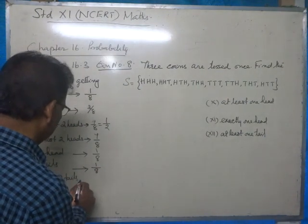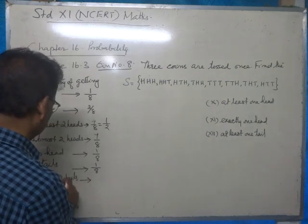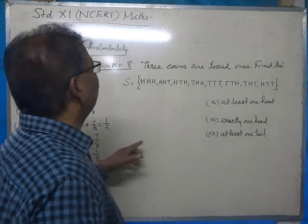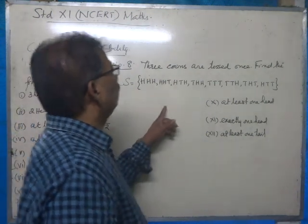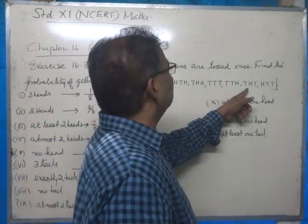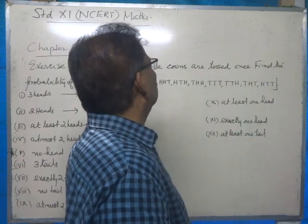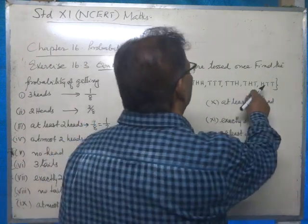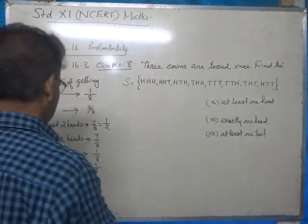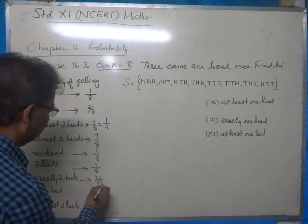Part seven asks for the probability of getting exactly two tails. We can identify three outcomes with exactly two tails — one, two, three. Therefore the answer is three by eight.